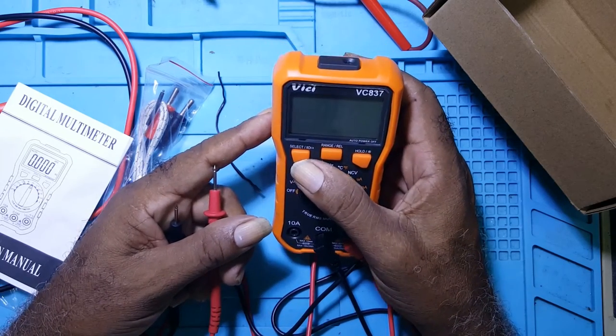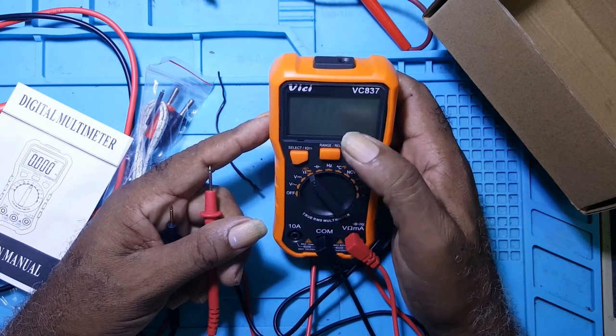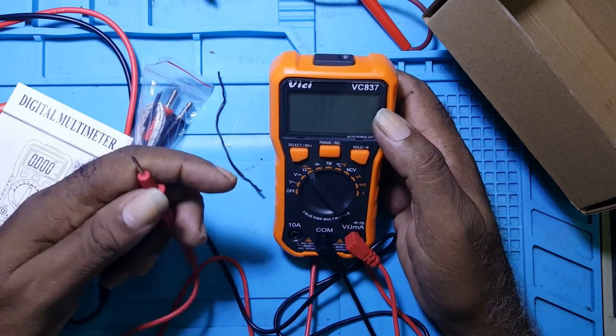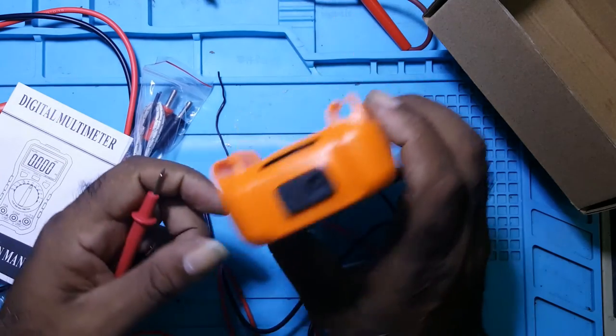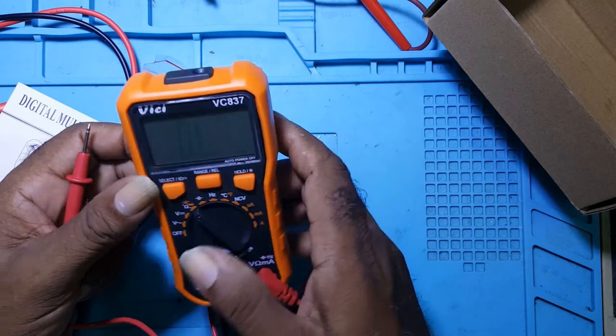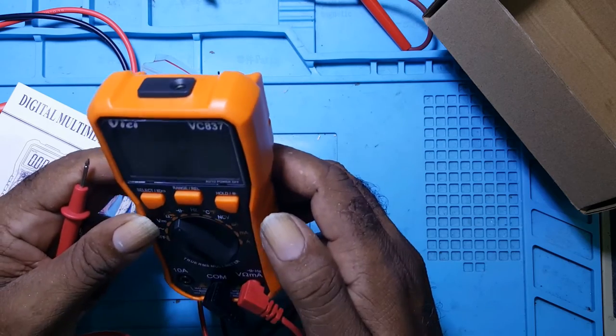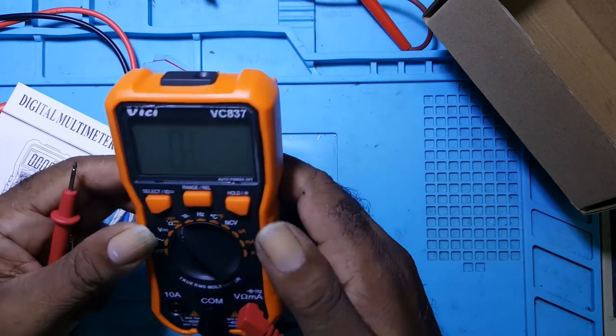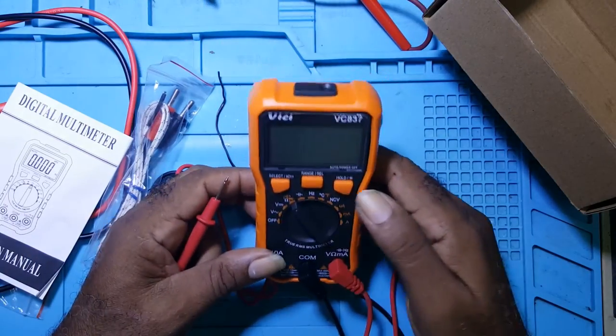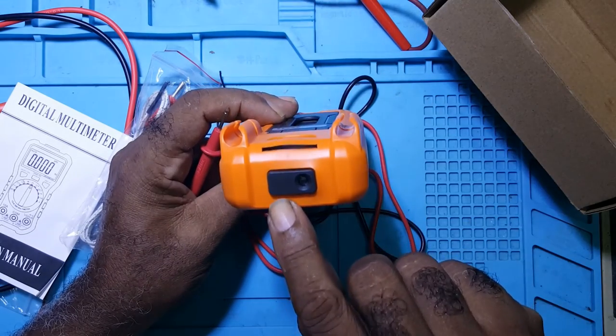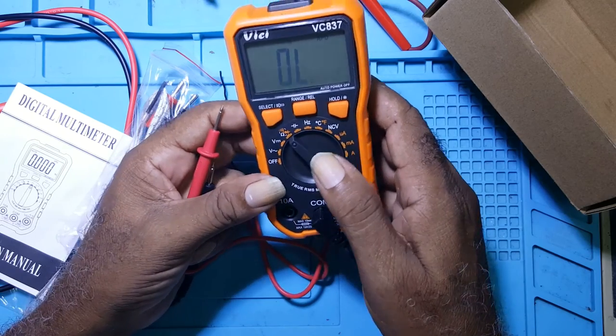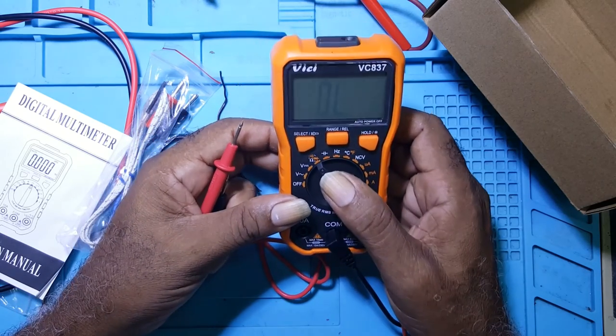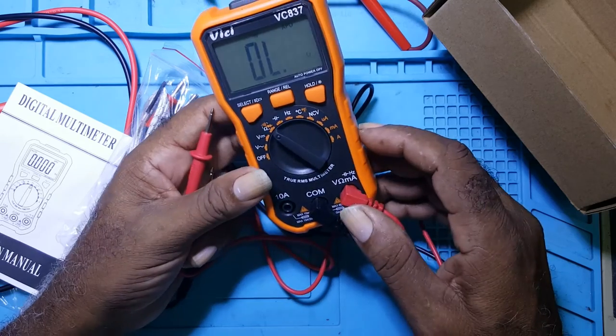You have the selector. Here you have the range. And it could also measure voltage without making contact. This is the buzzer here. I think that's the sensor. You put it by any live object and it should buzz.